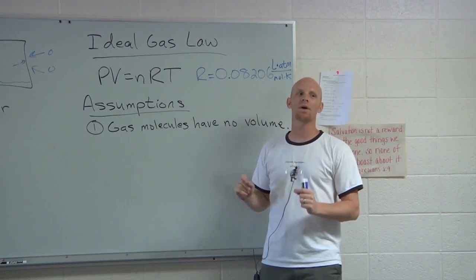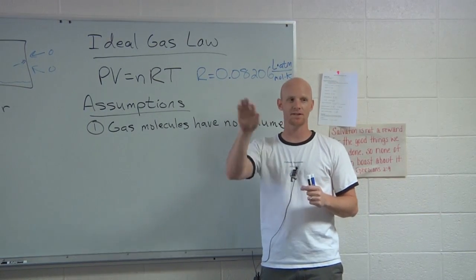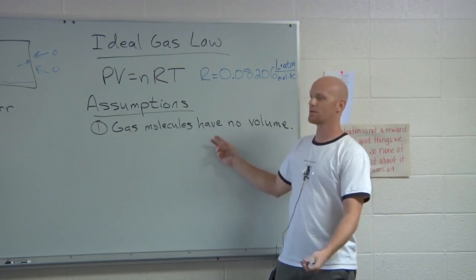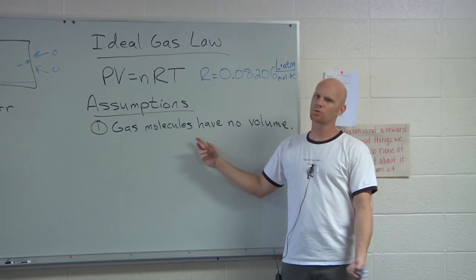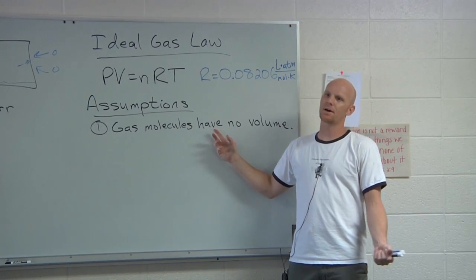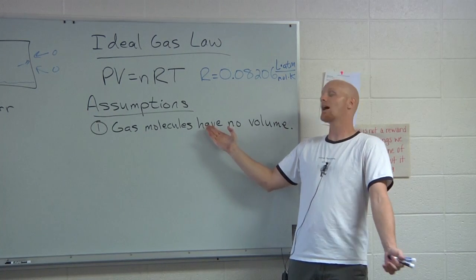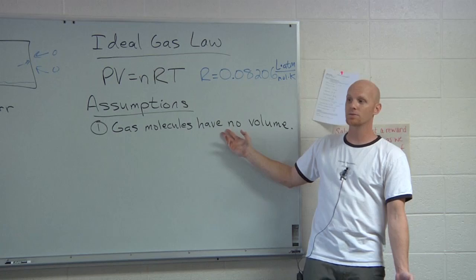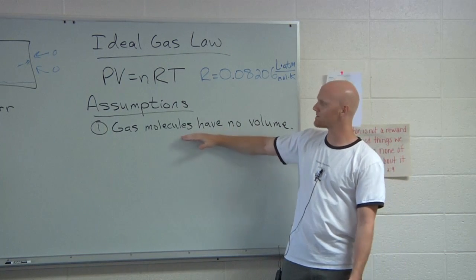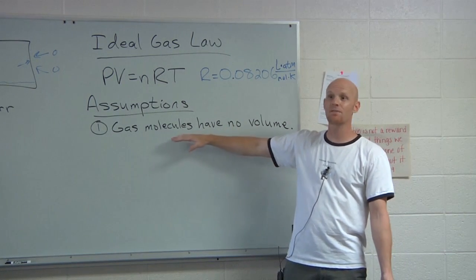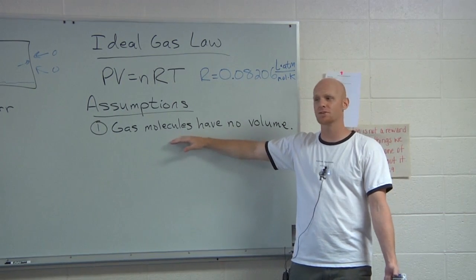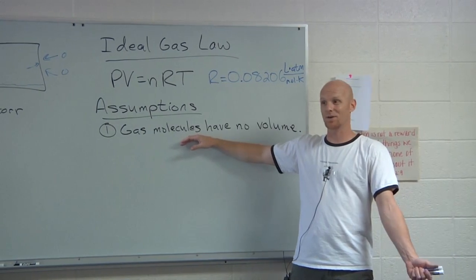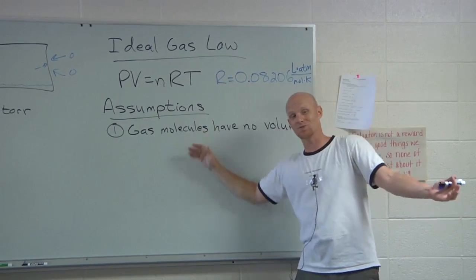For ideal gases, we round the small amount of volume they take up down to zero. We just say it's zero. Is it really truthfully zero? No, but it's not a bad approximation under most conditions — under many conditions it's like 99.999% true.